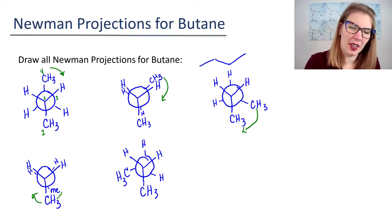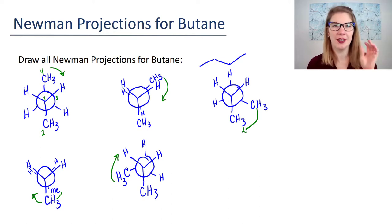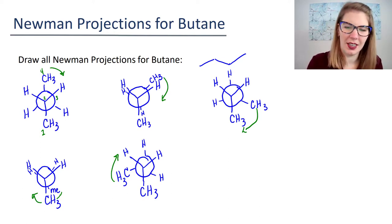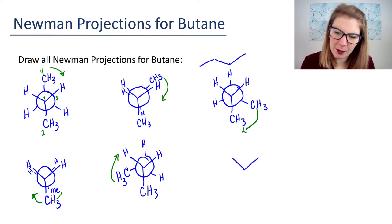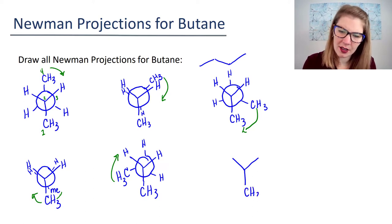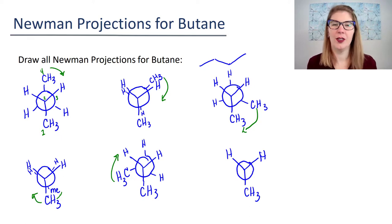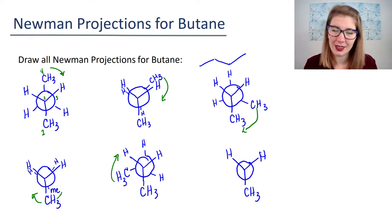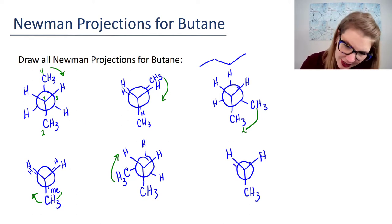One more. We'll take that methyl and rotate it another 60 degrees. We keep our front the same, and then my CH3 will be here, and we'll have some eclipsing protons.